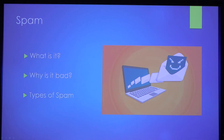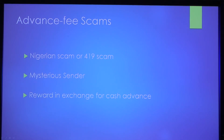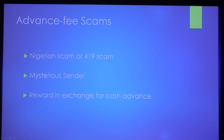Let's talk a little more about the advanced fee scams. These types of scams are typically referred to as the Nigerian scam or the 419 scam because the scam originated in Nigeria, and 419 refers to the section of the Nigerian criminal code the scams violate. This scam typically involves a mysterious sender offering you a vast reward in exchange for cash advanced, usually as some sort of processing fee required to unlock the larger amount. Once you send the money to the cyber criminal, the sender disappears with your money.